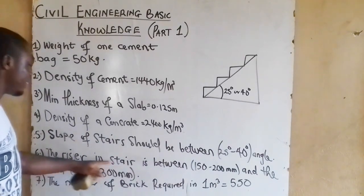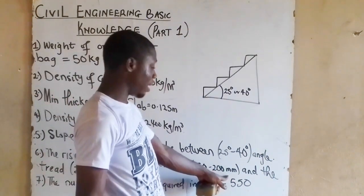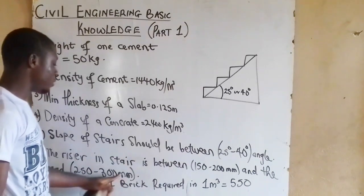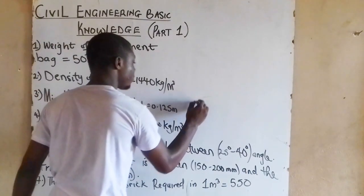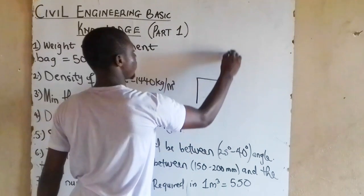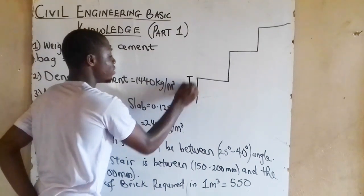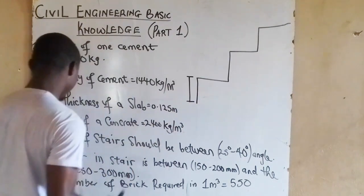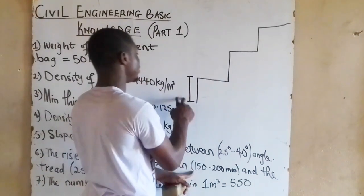The riser in stairs is in between 150 to 200 mm. Let me explain what we mean by this. If I have a staircase this way, this is a staircase. We call this the riser. We call it the riser.